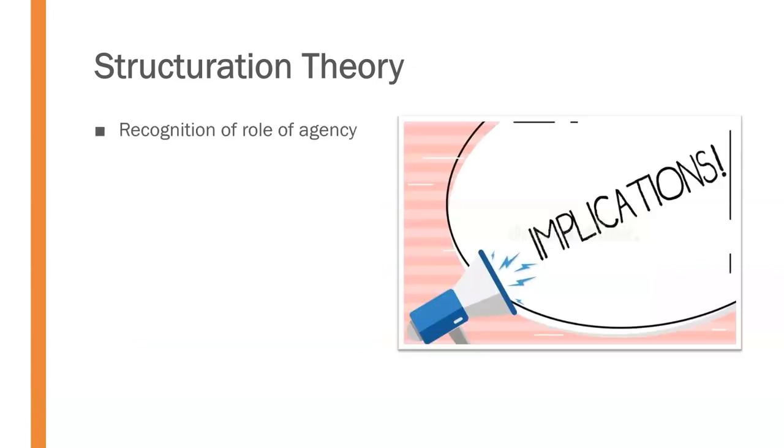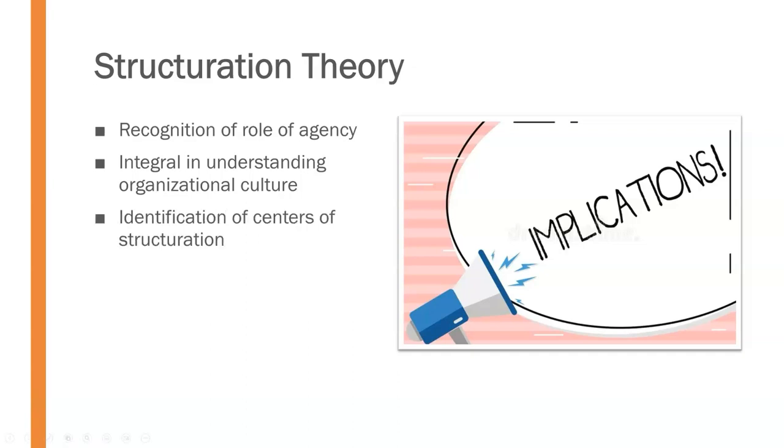Significantly, structuration theory recognizes the role of agency, or the impact of people working and acting within that structure. This recognition is significant in understanding the formation of an organization's culture, its collective attitude continually produced and reproduced by members' interactions. This also led to the identification of centers of structuration, which include conception, which is dominated by top management, implementation, which is overseen by middle management, and reception, determined by how employees receive and enact those decisions.